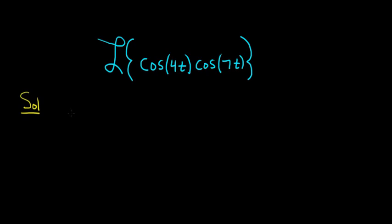So this problem relies on knowing a trig identity. If you have the cosine of a times the cosine of b, that's equal to 1 half.